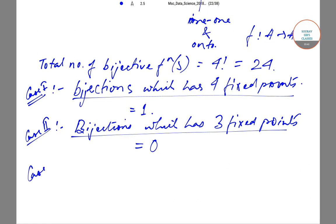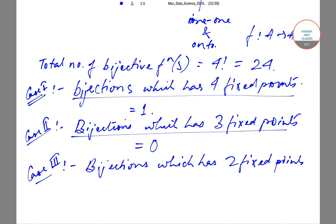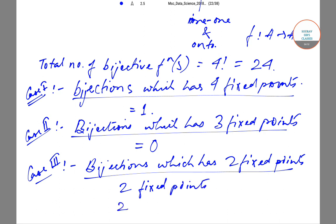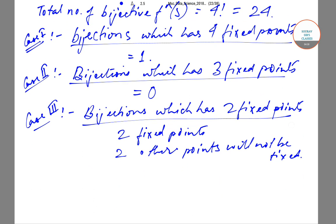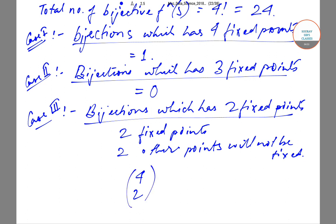The third case will be bijections which have two fixed points. This means two points will be fixed and the other two points will not be fixed. The number of such bijections will be 4C2 — choosing any two points from four to be fixed. 4C2 equals (4×3)/2, which is 6. So there are six bijections with exactly two fixed points.